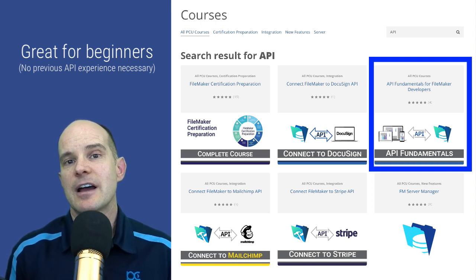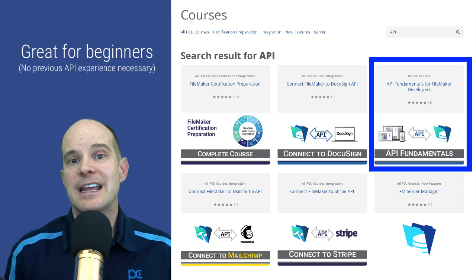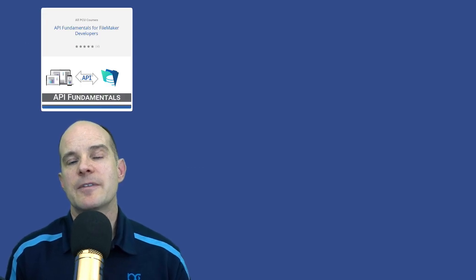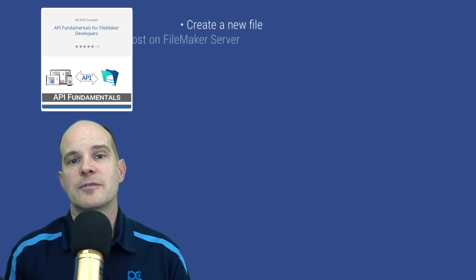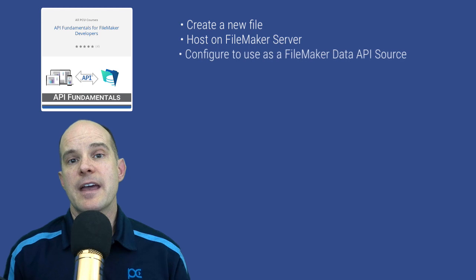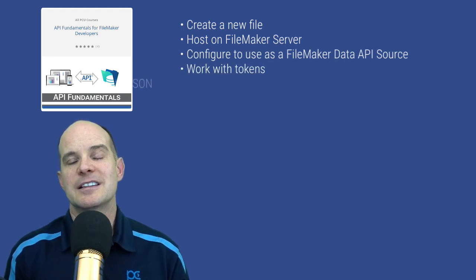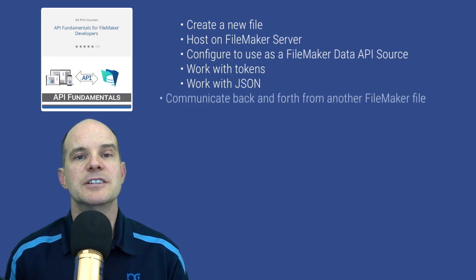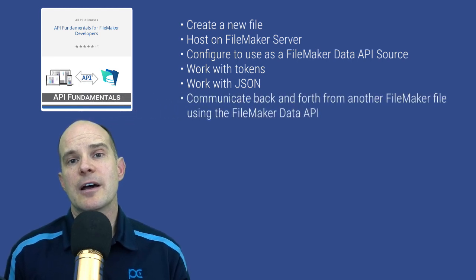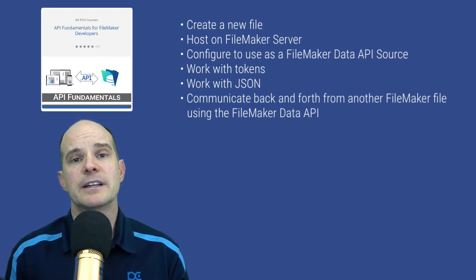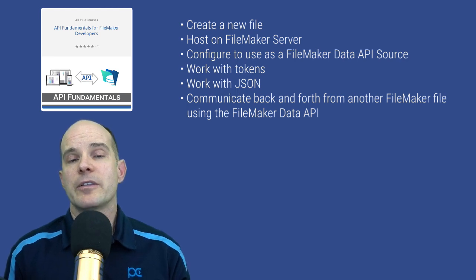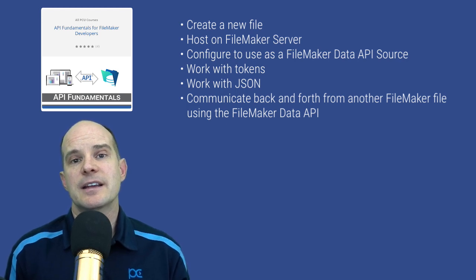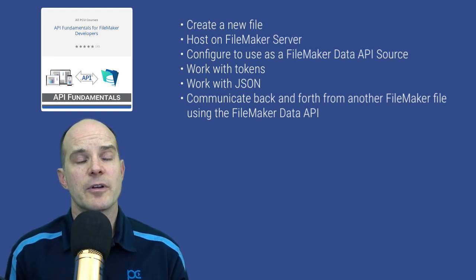By the end of it, you will have a firm understanding of how to talk back and forth with FileMaker's Data API. We show you how to set up a FileMaker file, have it prepared with FileMaker Server as a data source, and then talk from FileMaker to FileMaker using the FileMaker Data API methodology. You'll learn about JSON and how it's used, the Insert from URL script step necessary to get the ball rolling, token management, and all the basic components of working with any API. We start with the Data API since that makes the most sense, and at that point you'll have a firm understanding of just about any other API you work with going forward.